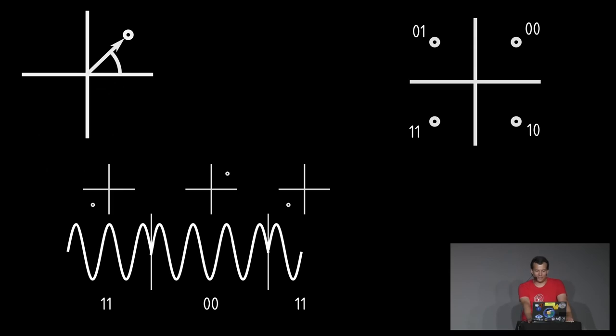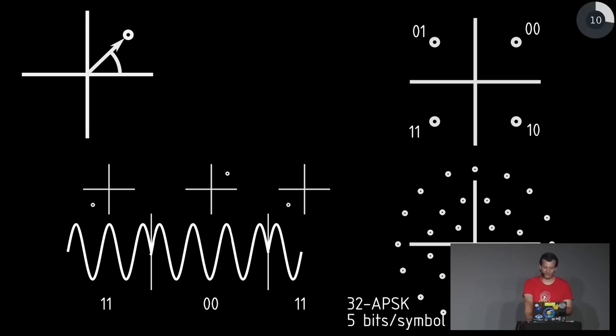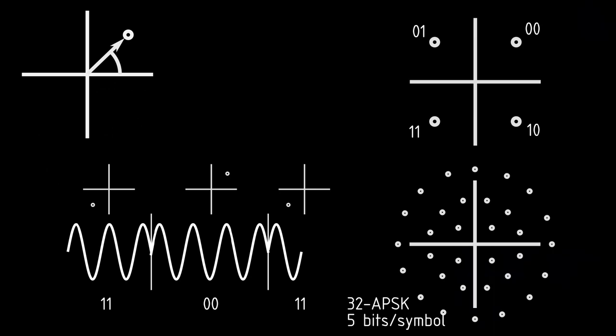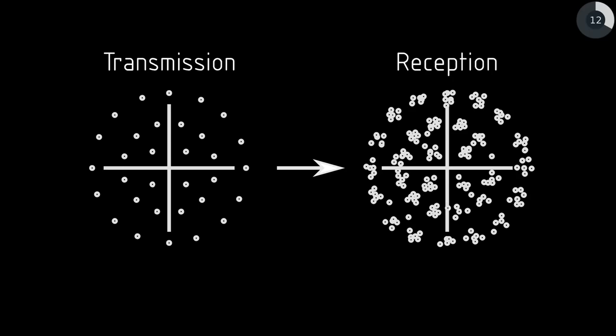As you have probably already guessed, if we want to transmit more information - more bits with the same symbol - we just have to use a constellation diagram with more valid points. For example, here we have 32 points in 32-APSK with five bits per symbol. So why don't we just use infinite points in the constellation diagram? When we actually transmit the information, we can pretty accurately hit these valid points, but when we receive them we see that they are not always exactly where we were expecting them, so under some conditions we can't validly identify the correct symbol anymore.